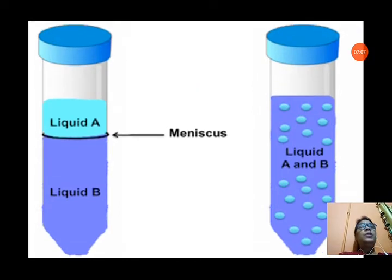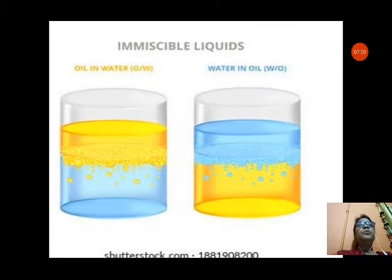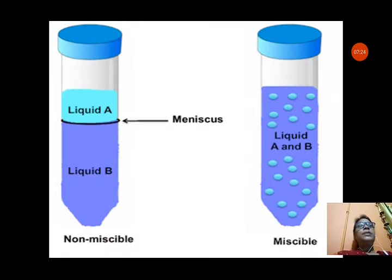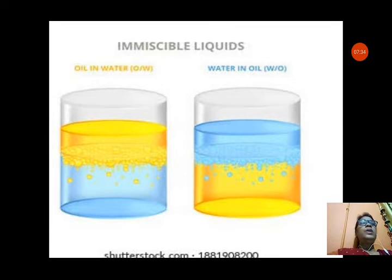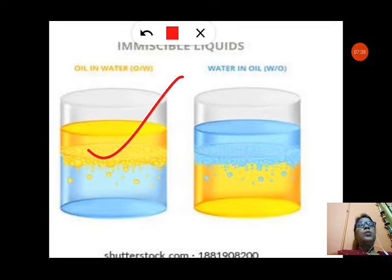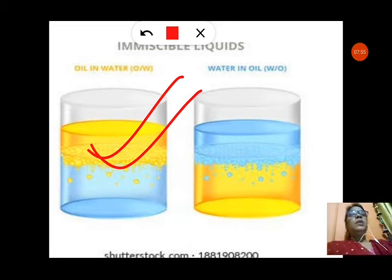In the picture, you can see Liquid A and Liquid B forming separate layers because they are immiscible. Whether you put oil in water or water in oil, they will not mix — they always form separate layers. Oil floats above water because oil is lighter than water, so oil and water always form a separate layer as they are immiscible liquids.